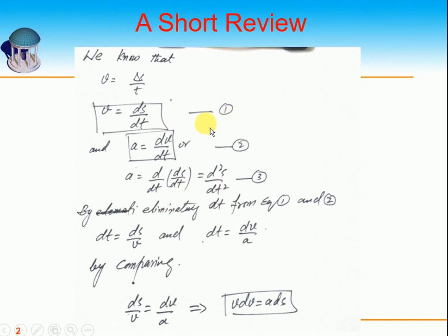Acceleration is the rate of change of velocity — this is equation number two. Written in terms of displacement, acceleration is d/dt(dS/dT) = d²S/dT², which is also called S double-dot. The dot notation means we are taking the derivative with respect to time — whenever there is a dot, it means derivative with respect to time.